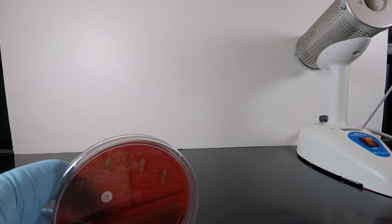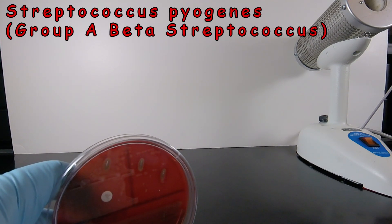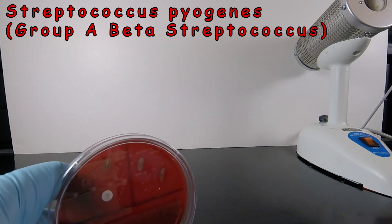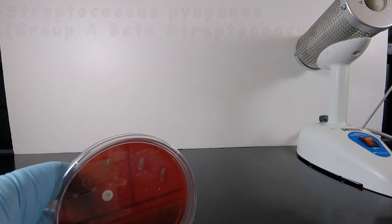One of the bacteria we're going to identify in today's lab is Streptococcus pyogenes, also known as Group A Beta Streptococcus. This is the bacterium that causes streptococcal pharyngitis or strep throat.